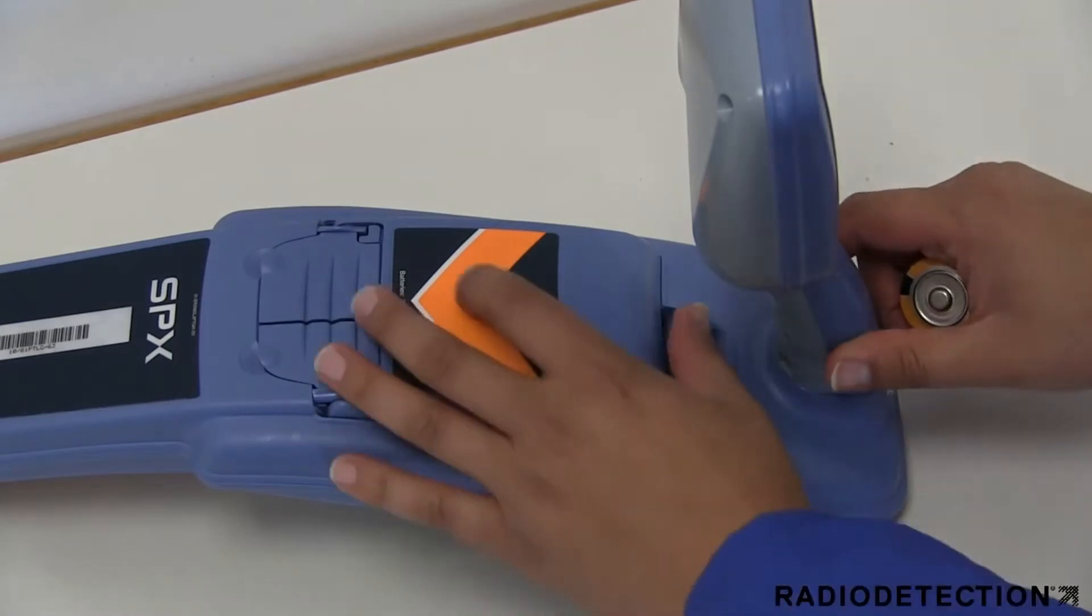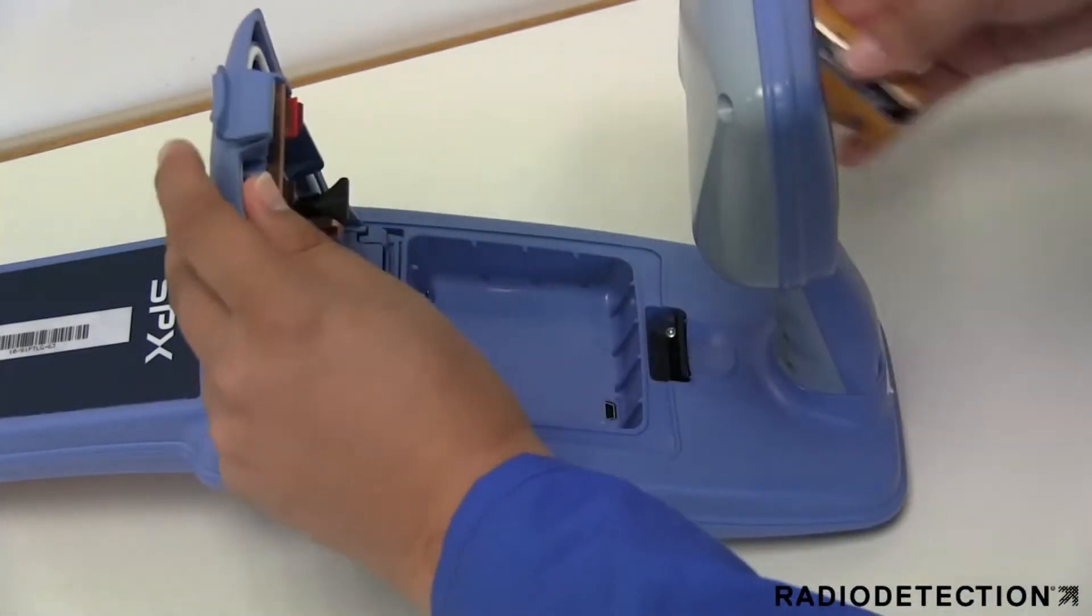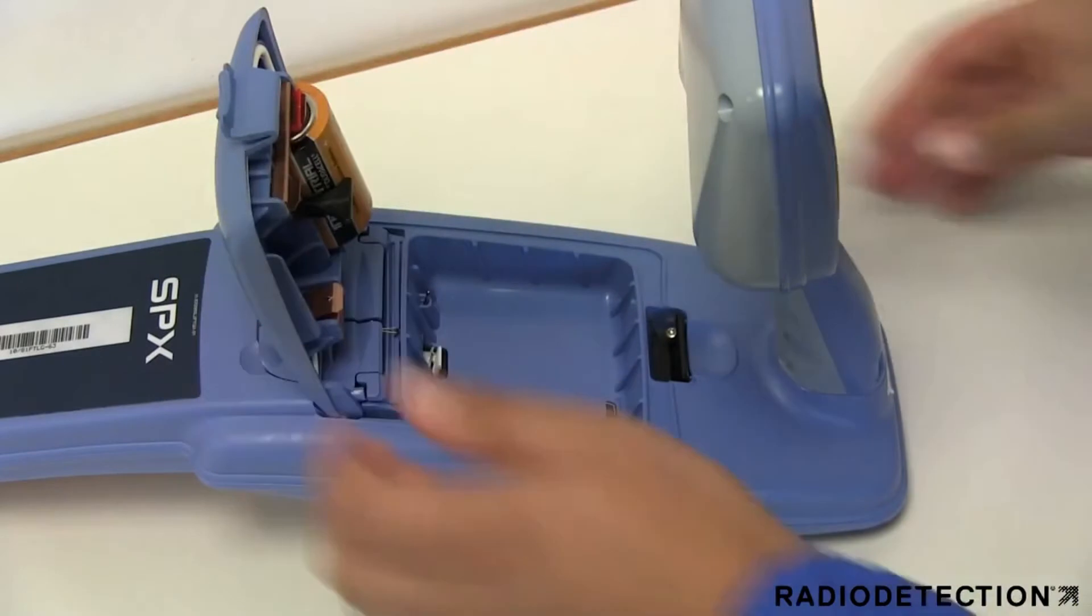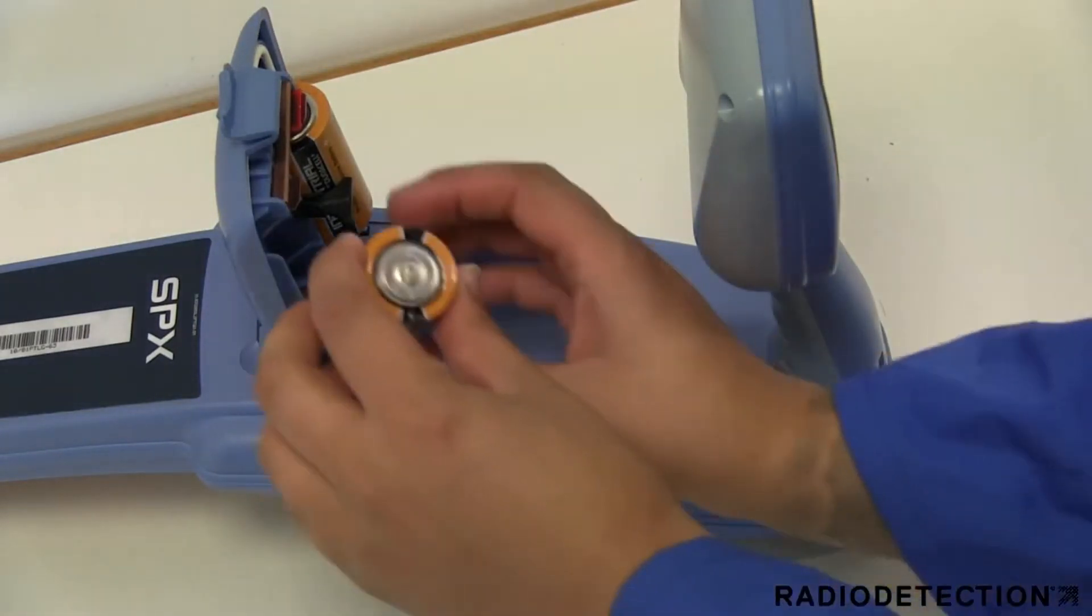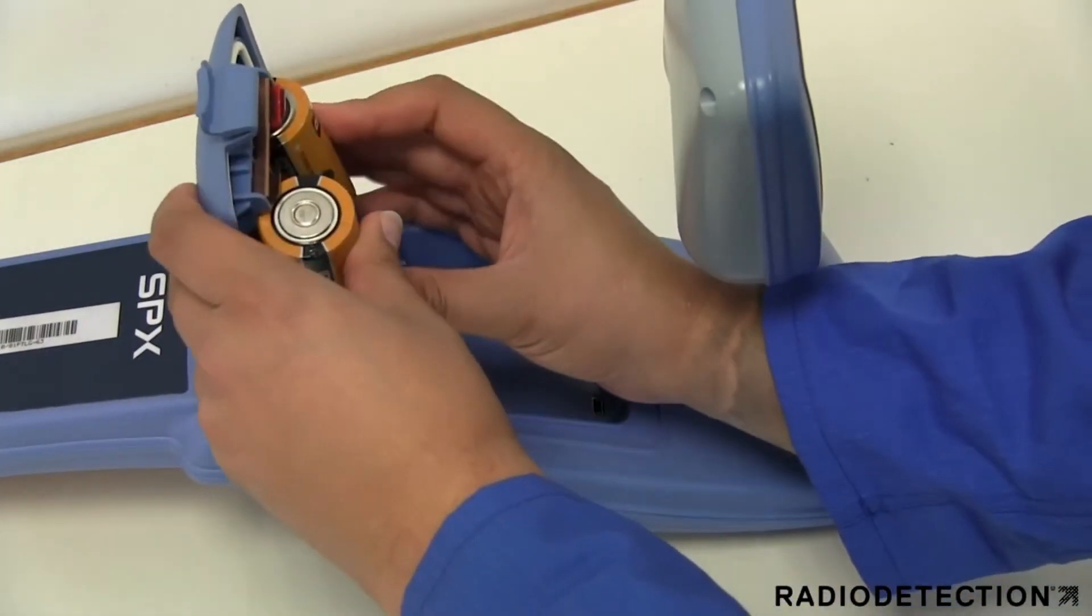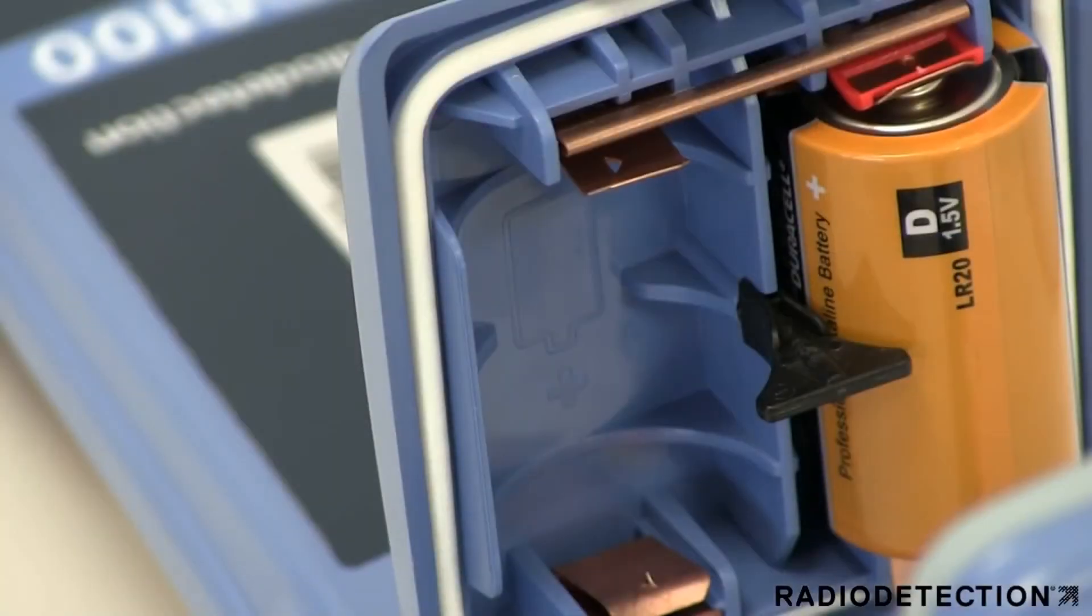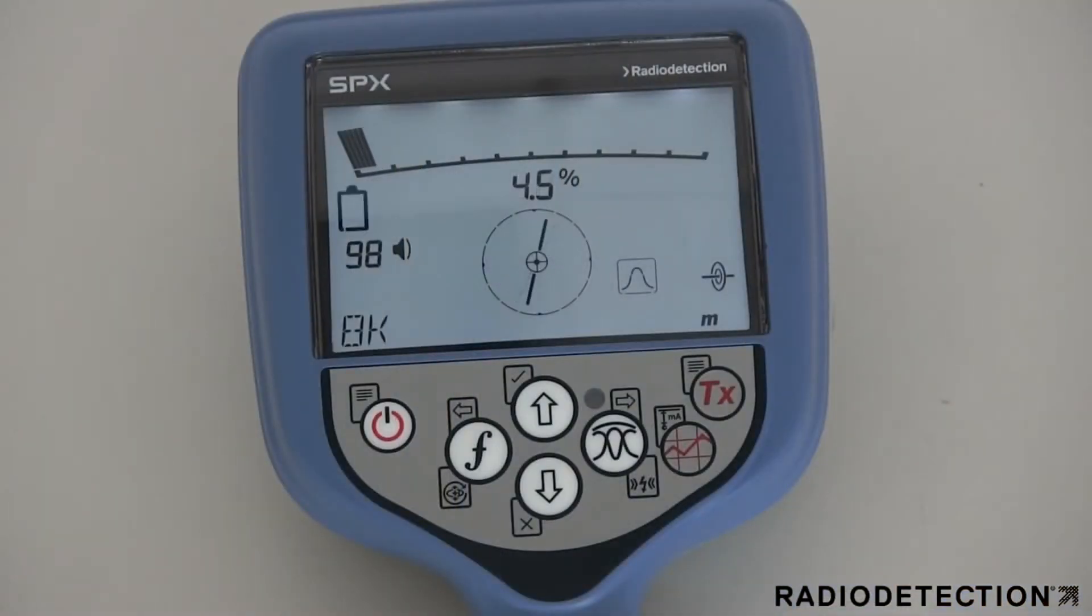The locator is supplied with a battery compartment already fitted. To fit the batteries, open the battery compartment and insert two good quality D cell alkaline or nickel metal hydride batteries. There is a diagram on the battery compartment to guide you on the correct polarity. The locator display provides a battery level indicator. When battery replacement is necessary, the display shows a flashing battery icon.